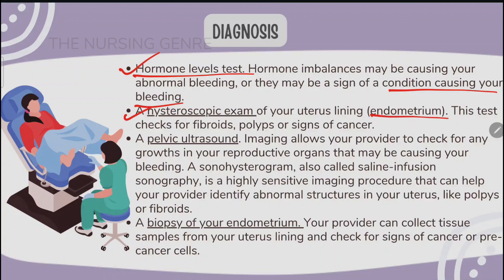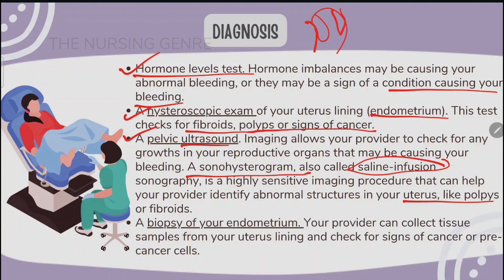A hysteroscopic examination or endometrial biopsy checks for fibroids, polyps, or signs of cancer. Imaging through ultrasound allows you to check for any growths in your reproductive organs. A sonohysterogram (saline infusion sonography) is a highly sensitive procedure that can help identify abnormal structures in your uterus, such as polyps. A biopsy of your endometrium collects tissue samples from your uterus lining to check for signs of cancer or pre-cancerous cells.